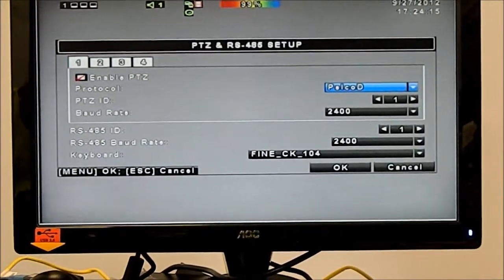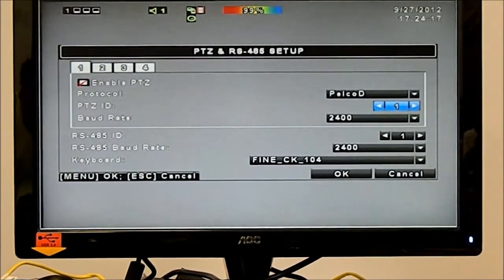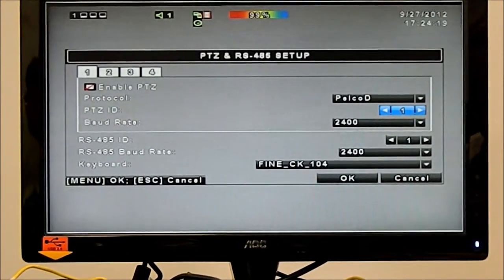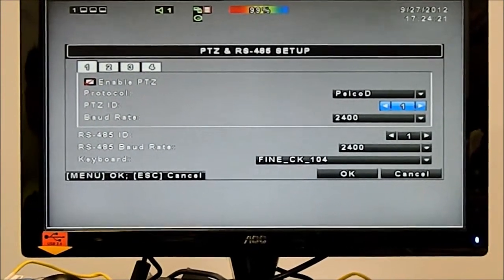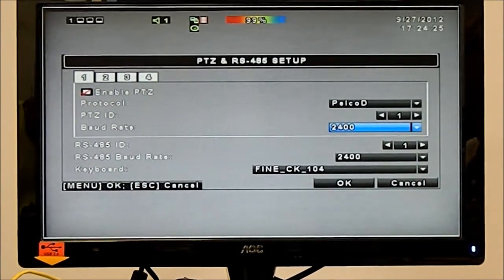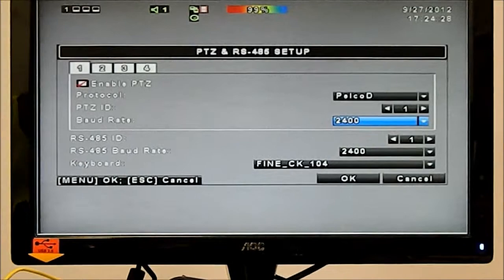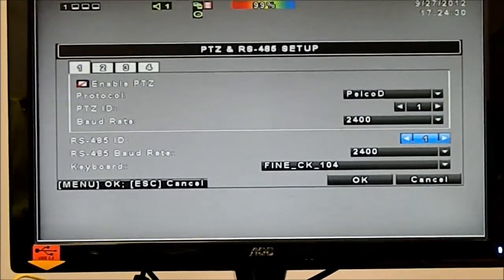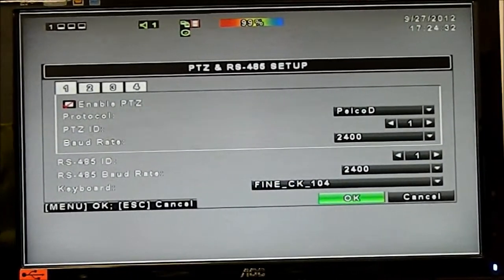You've got different types of protocol. If you have several PTZ cameras, then the number would go here - one, two, three, and so on. And then the baud rate is 2400. We are using the same baud rate in our PTZ camera, the SpeedDome. And that's it. So you press OK.